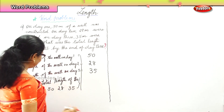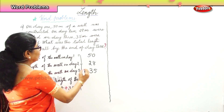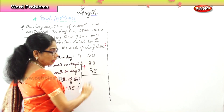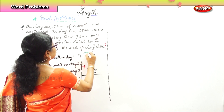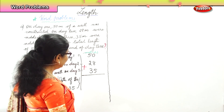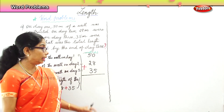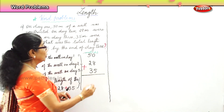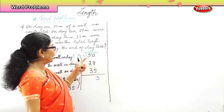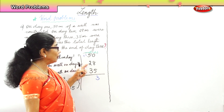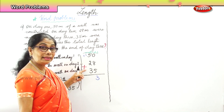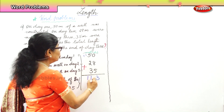We are going to add 50 plus 28 plus 35. We must note they are all in meters. Starting from the units column: 0 plus 8 is 8, plus 5 is 13. We put down 3 and carry over 1. Then 5 plus 1 is 6, plus 2 is 8, plus 3 is 11. So the total is 113 meters.